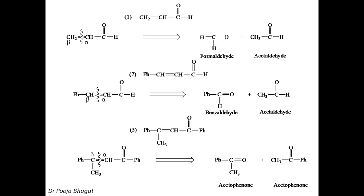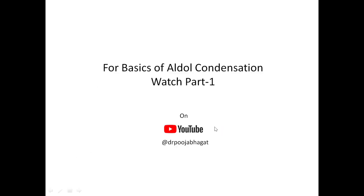These are the ways by which you can synthesize an aldol or alpha-beta unsaturated aldehyde or ketone. You can predict the starting material, and once you know the starting material you can easily carry out the condensation. Thanks for watching. If you want to see the basics of aldol condensation, please watch part 1. Thank you.